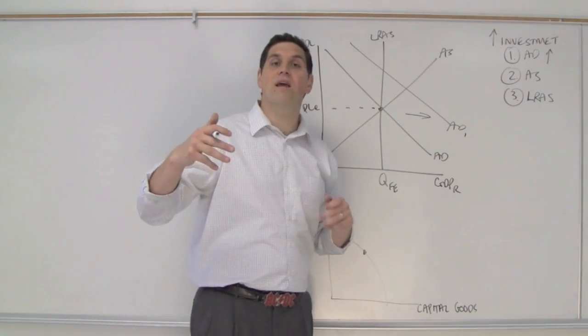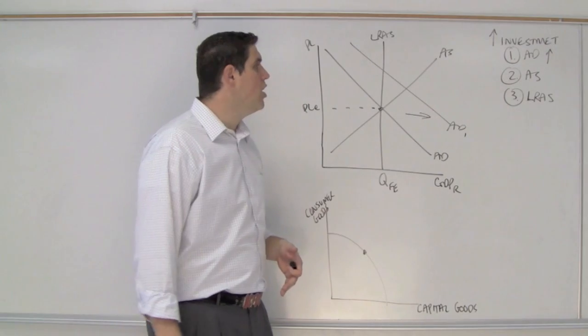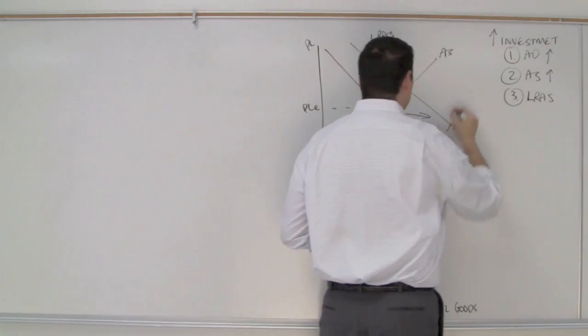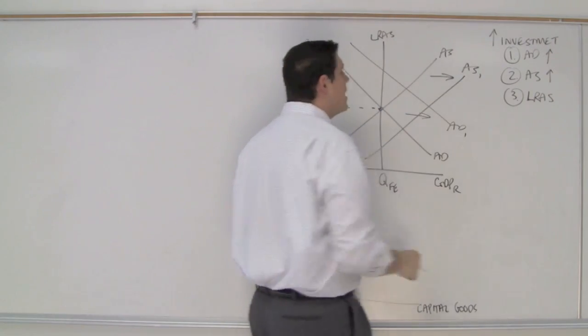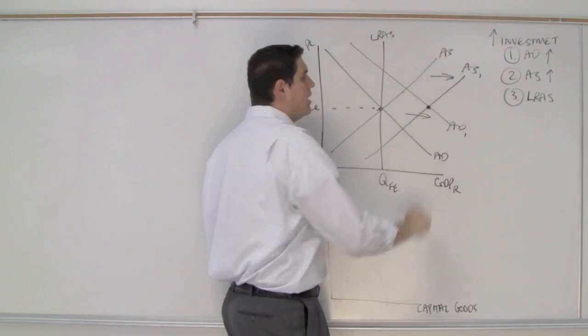When there's an increase in capital, when there's more machinery and there's more robots and things to produce, what happens to the aggregate supply? Well, that is also going to increase. So aggregate supply is going to shift to the right because now we can produce more. So we just went from here to here and now we are here.